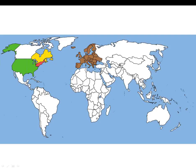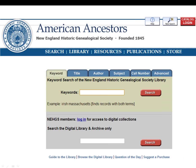Our collection covers the entire world, but with a special emphasis on the United States, especially New England, the Mid-Atlantic, and Midwest. There's also Canada's eastern provinces — Ontario, Quebec, New Brunswick, Newfoundland and Labrador, Nova Scotia, and Prince Edward Island — and all of Europe. The best way to start exploring library resources is through the library catalog.